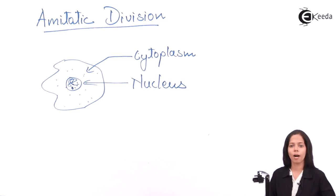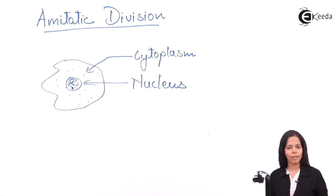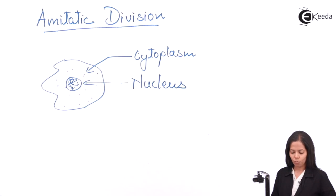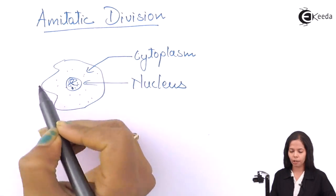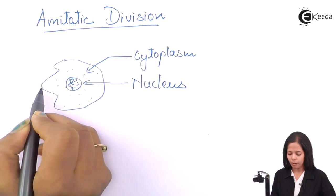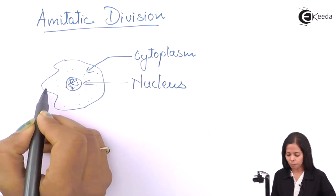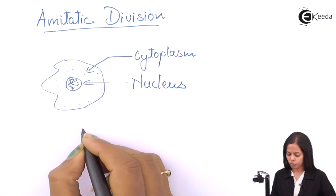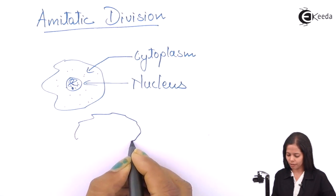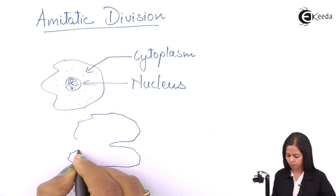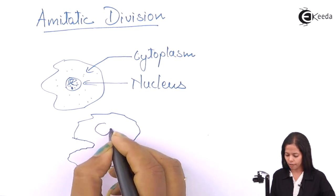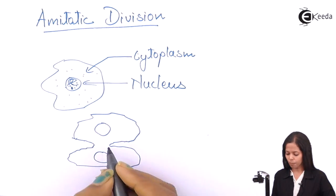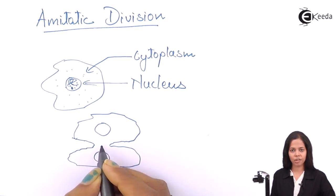This is the nucleus and cytoplasm of amoeba. Now it's time for amoeba to get divided. So what happens during cell division of amoeba? Gradually, the cell membrane, which is irregular, starts getting invaginated — that is, the membranes start moving inward. The nucleus is already divided.